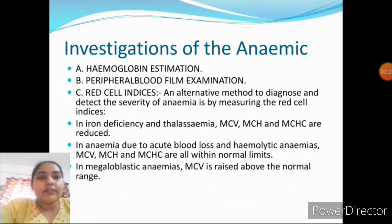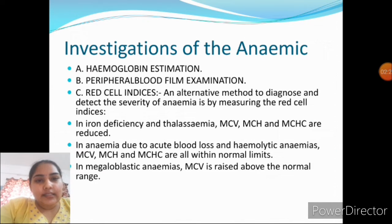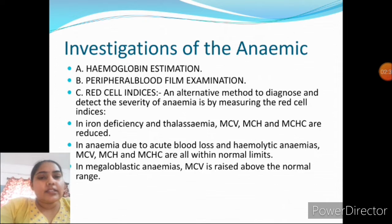Investigations of anemia: first and most important is Hb estimation. Second is peripheral blood film examination. Third is red cell indices — an alternative method to diagnose and detect the severity of anemia. In iron deficiency and thalassemia, MCV (mean corpuscular volume), MCH (mean corpuscular hemoglobin), and MCHC (mean corpuscular hemoglobin concentration) are reduced.